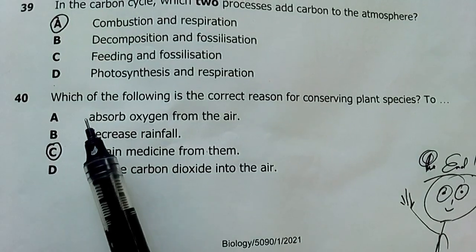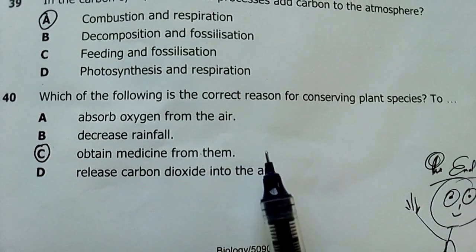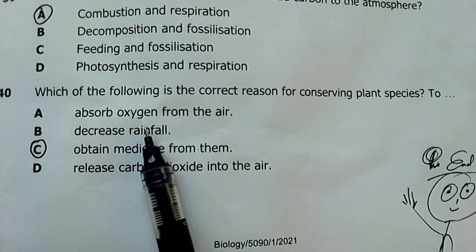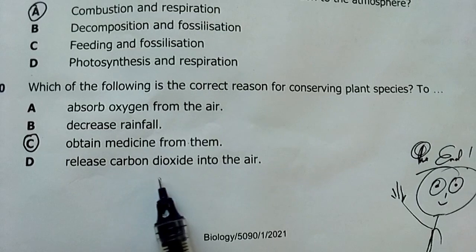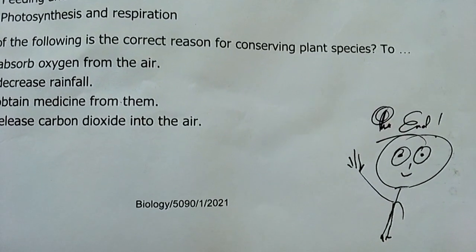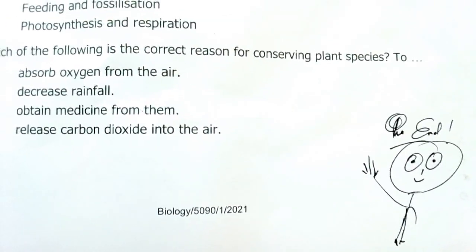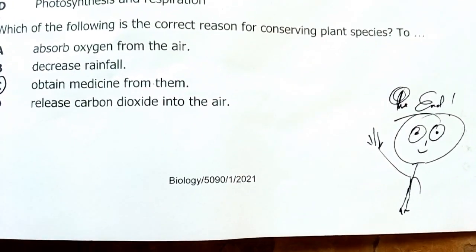And my last question in this paper is, which of the following is correct reason for conserving plants? To obtain medicine from them? Decreasing rainfall, we need rainfall, we need oxygen, release of carbon, we don't need this one. So, C is the answer. This marks the end of this revision in this paper. That's me, and I'm saying bye-bye to you. I'll see you in the next video. Bye for now.